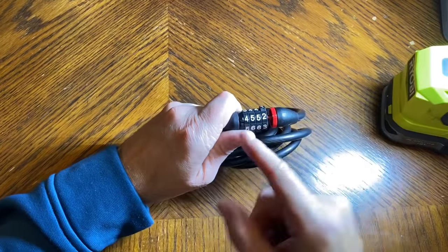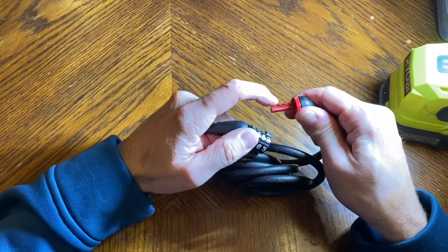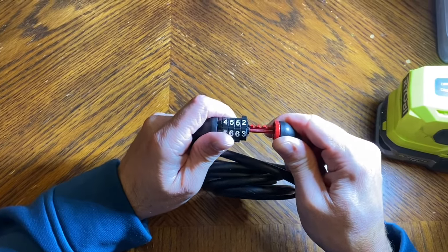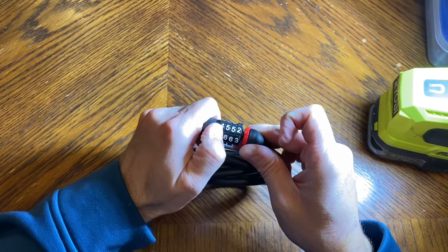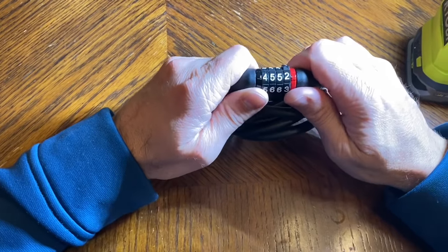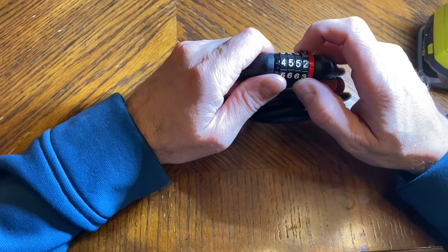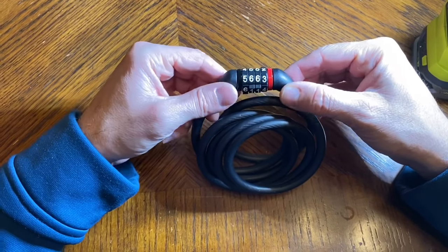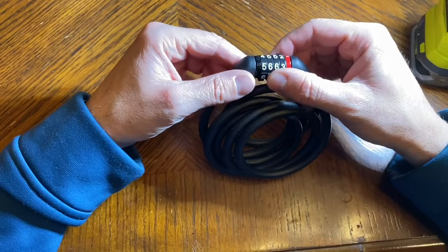We were able to tell because see how the teeth on these are pulling against the numbers? When you have a correct number, it's pulling to the right of the number you have correct. So this was a way that we were able to figure out the combination on this lock. Maybe this will be helpful for you if you have a similar lock. Thanks for watching, be sure to subscribe. Thanks.